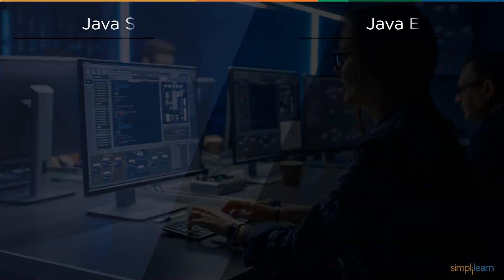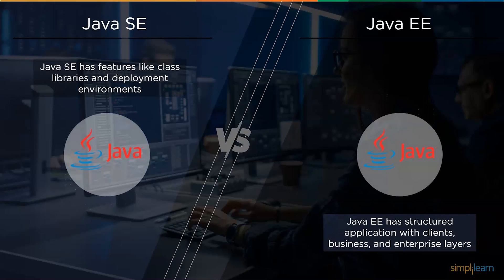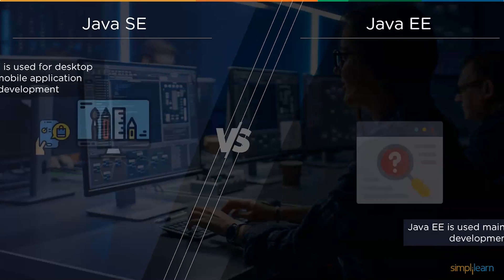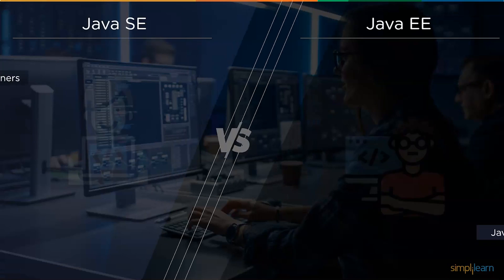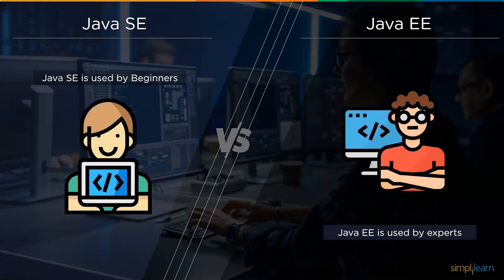Third, Java Standard Edition comes with features like class libraries and deployment environments, whereas Java Enterprise Edition has a structured application with client, business, and enterprise layers. Fourth, Java Standard Edition is used for desktop and mobile application development, whereas Java Enterprise Edition is used mainly for development of web applications.